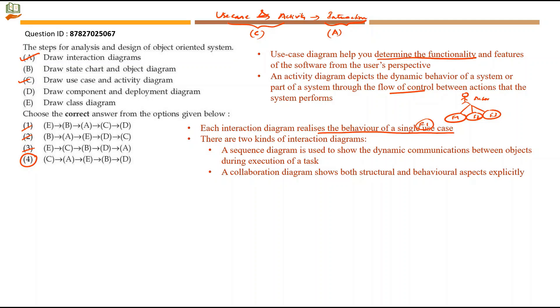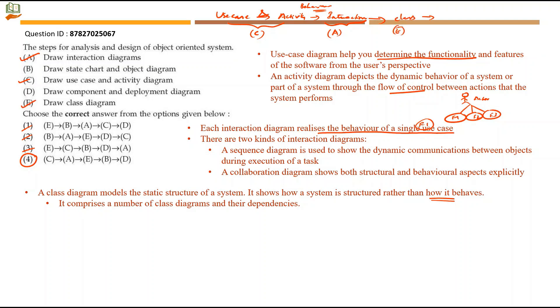Let's continue. A class diagram shows how a system is structured rather than how it behaves. So behavior is over with interaction diagram. Now we are getting into the static part. A class diagram models the static structure of a system. It comprises a large number of class diagrams and their dependencies - in the sense how they are associated or how they are related to each other. So we can mark class diagram as the next one. So E comes next.